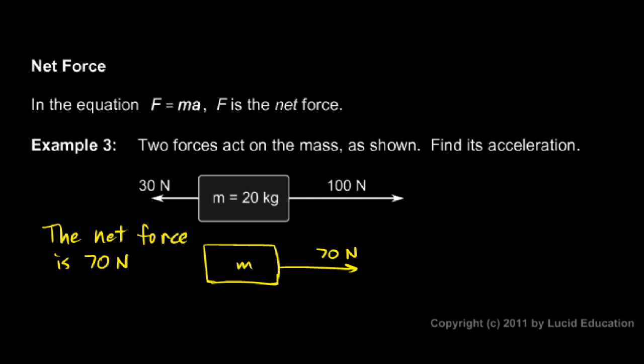So if we want to do the calculation and find the acceleration, we'll say A is equal to F over M. And the number we put in for the force is the net force. So it will be 70 newtons divided by the mass of 20 kilograms. And 70 divided by 20 is 3.5. So that's our answer, 3.5 meters per second squared.